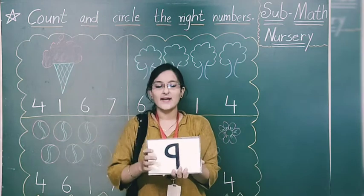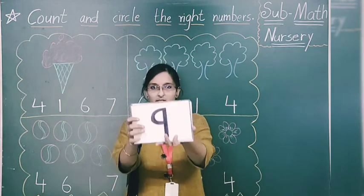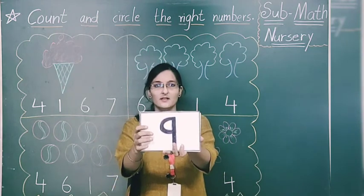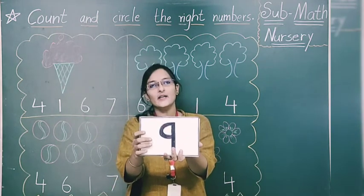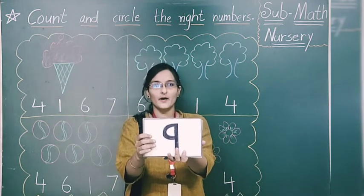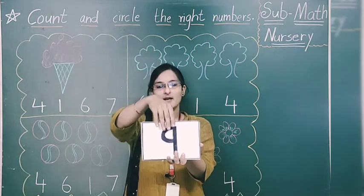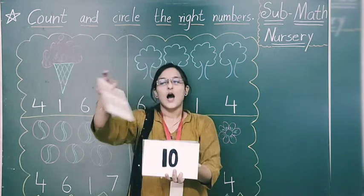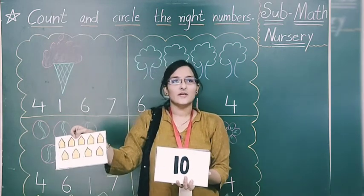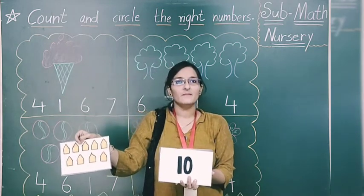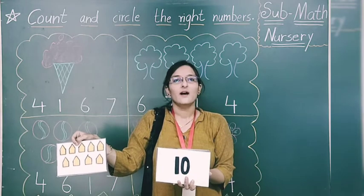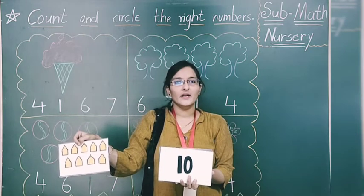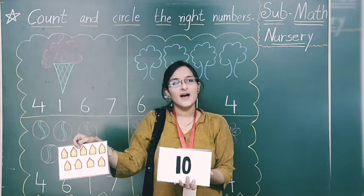Moving to next. What is this? Number 9. How many rectangles are there? 9.